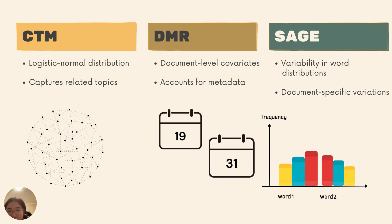As for SAGE, it ensures the model's flexibility by allowing word distributions to vary across documents within the topic. Think of this as the ability to understand subtle nuances in word usage across different contexts.